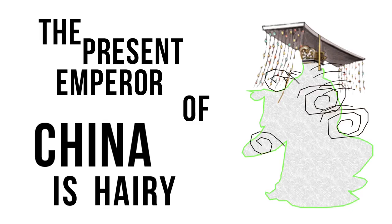What about the statement 'the present emperor of China is hairy'? This phrase certainly is denoting in that it does refer us to something like a sense, but it has no reference because there is no present emperor of China. So is the statement 'the present emperor of China is hairy' a true or false statement?